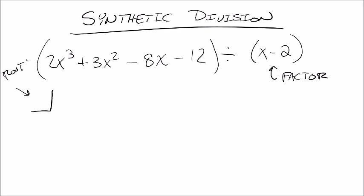Now the root is when you simply take your factor and set it equal to 0. So in this case if I add 2 to both sides, we'll get that x = 2. So that's what I'm going to put in this box here, that 2.